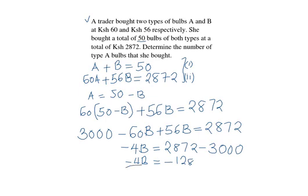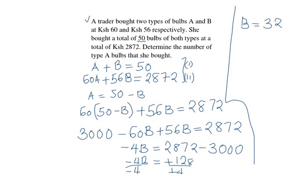and the value of B is equal to positive 32 because we have negative number divided by a negative number. So we have the type of B is 32, and the total number of bulbs bought were 50.